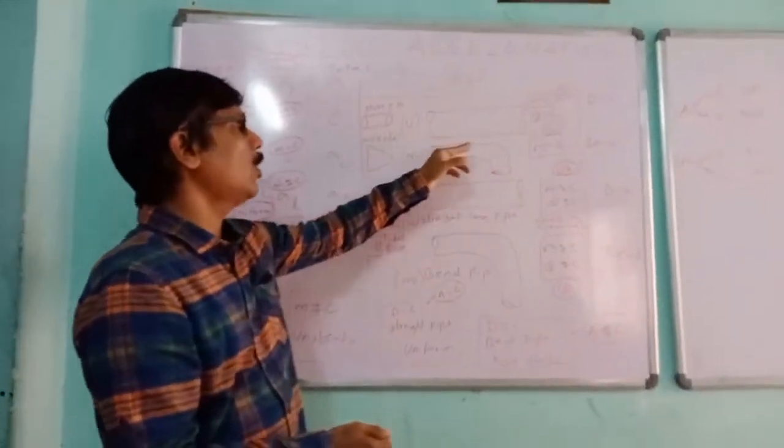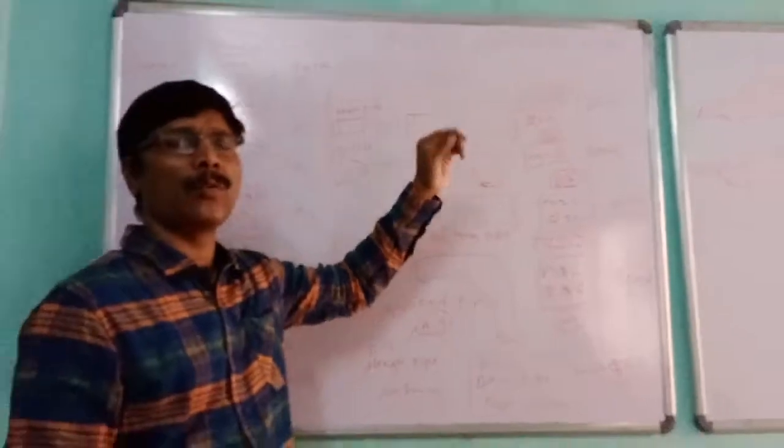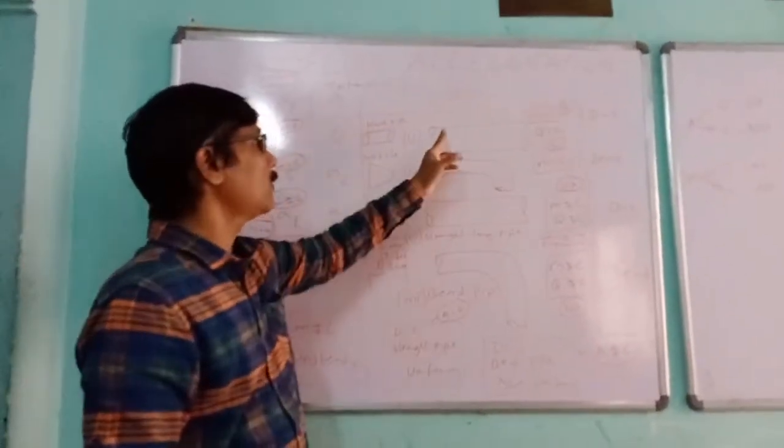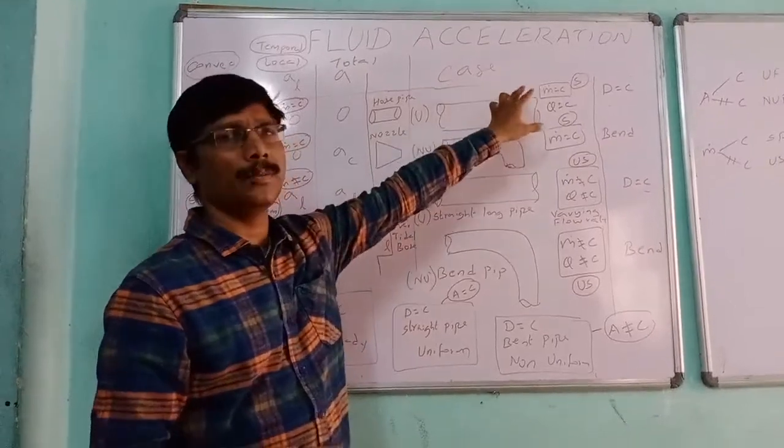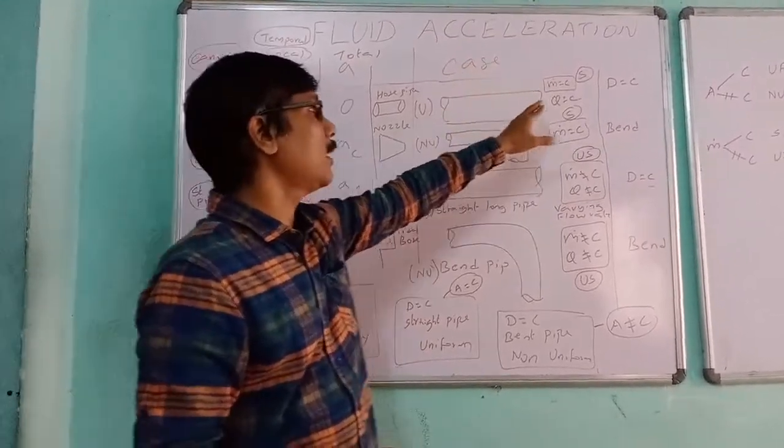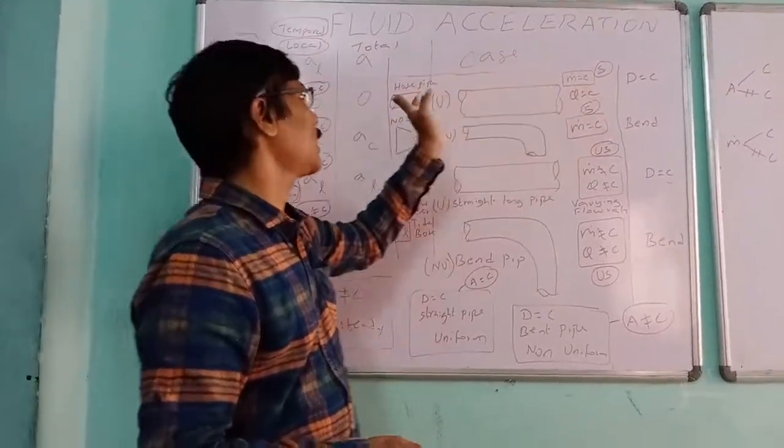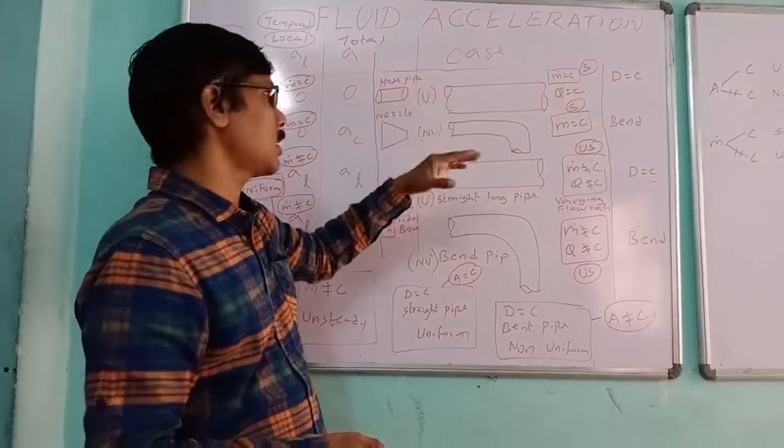It is uniform flow and steady flow. We can get steady and uniform flow in the hose pipe. It is uniform because it has constant cross section. It is steady because the mass flow rate is constant. So in hose pipe, the mass flow rate is always constant.